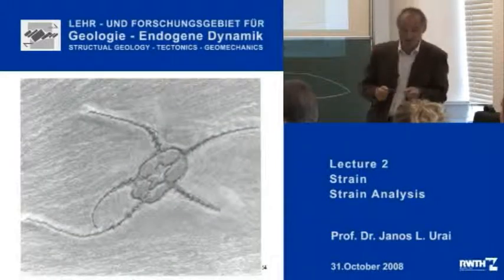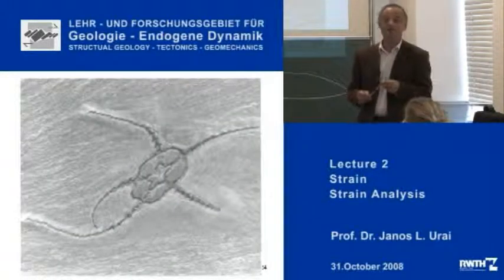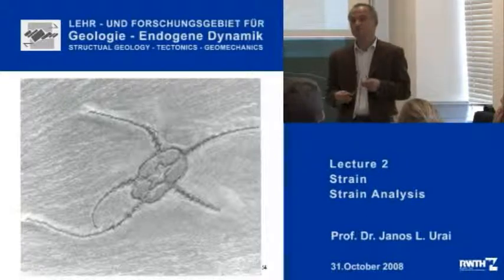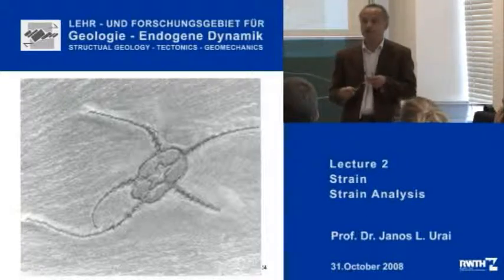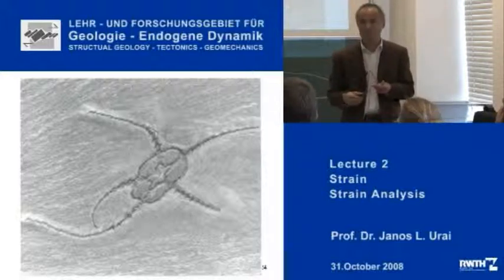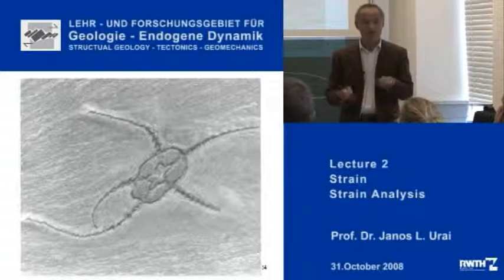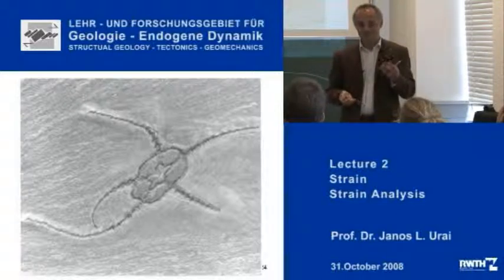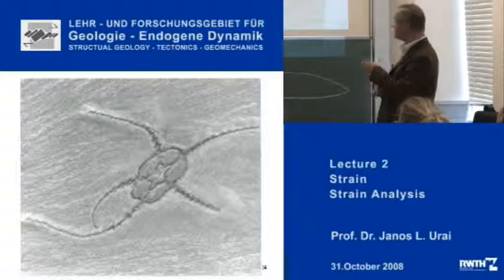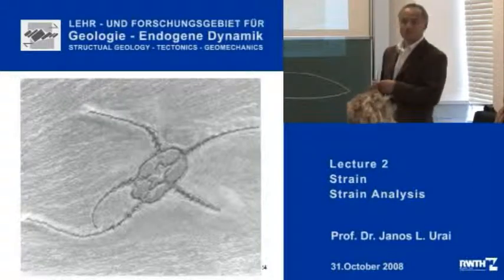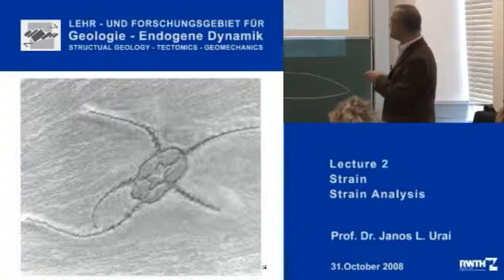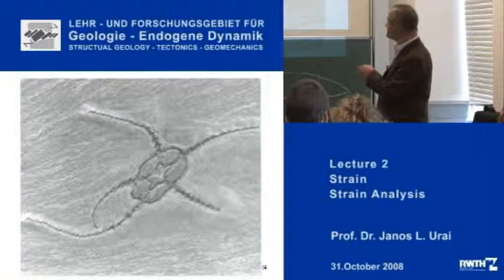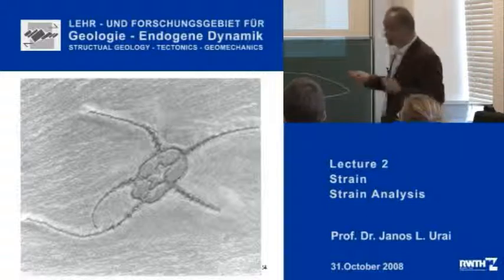But there are some other rather interesting objects. A very famous example is in the Hunsrück — quite close to here, around Koblenz — the Hunsrück Schiefer. They have a beautifully preserved fauna of many fossils. The Hunsrück Schiefer is a deformed rock with quite well-developed cleavage. The fossils in this Hunsrück Schiefer are all deformed. For example, this object used to be a circle, and this fossil has been shortened in this direction and stretched in that direction — of course, it changes the shape.